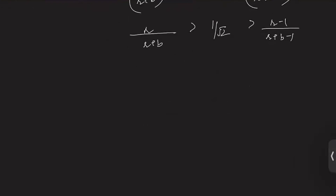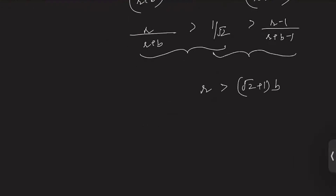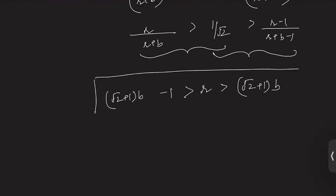Solving the first inequality gives r greater than (√2 + 1)b. Solving the second inequality gives r less than (√2 + 1)b minus 1. So now we have the range of r for different values of b.